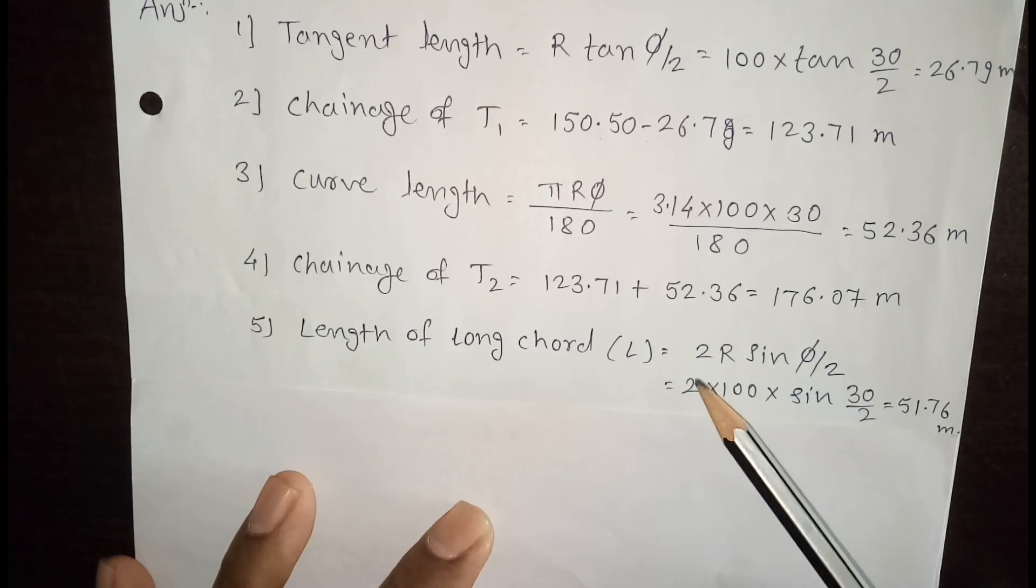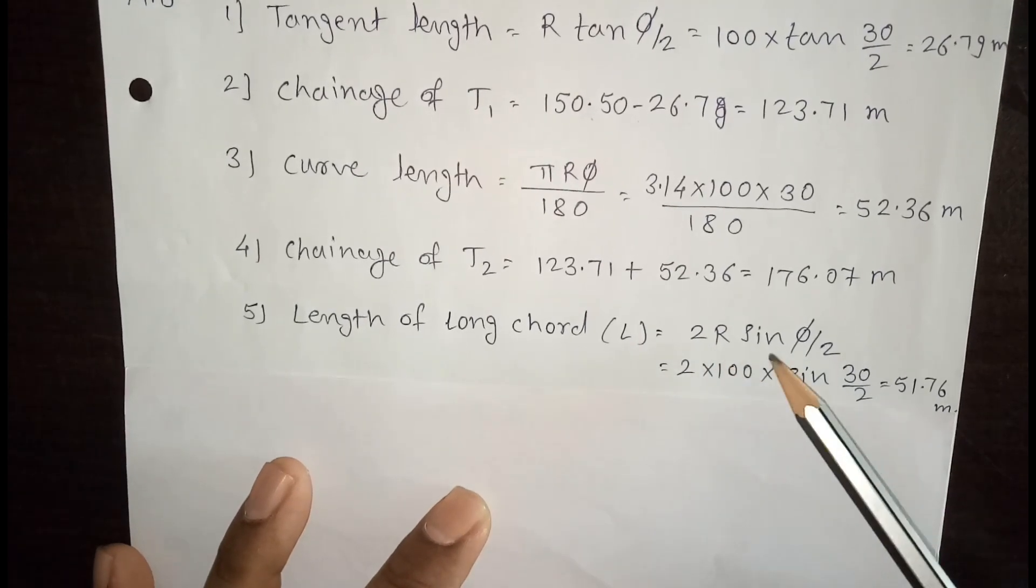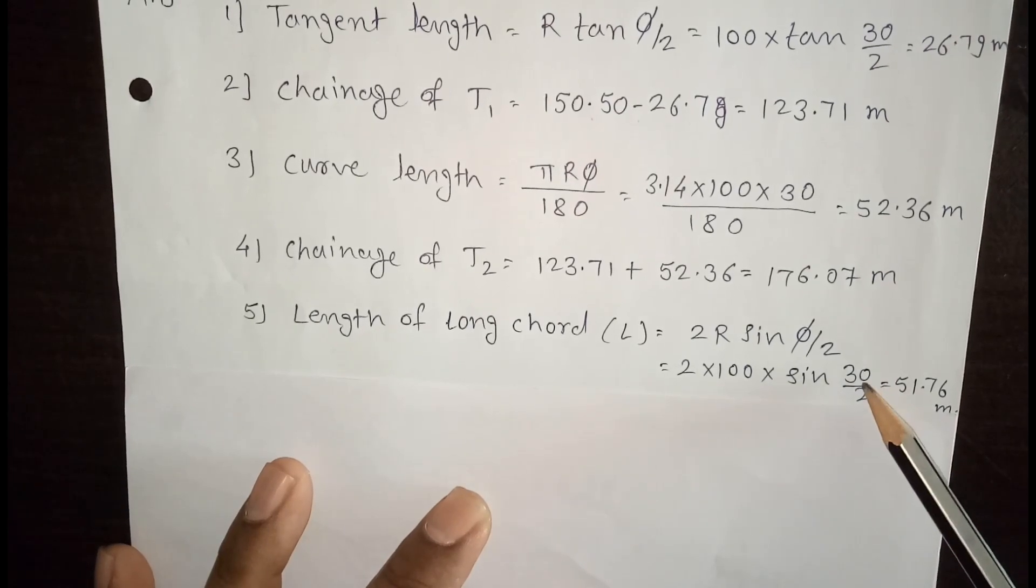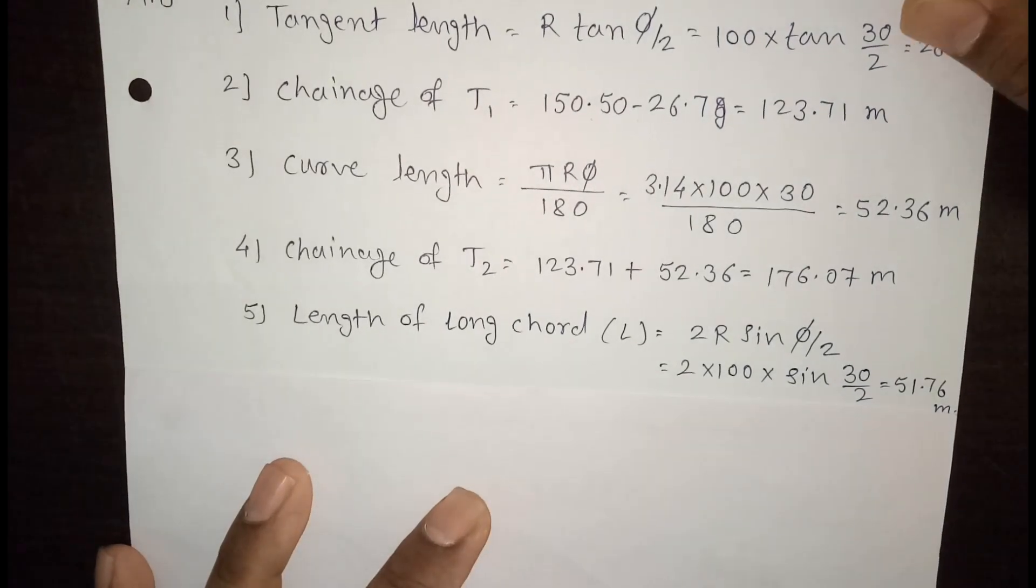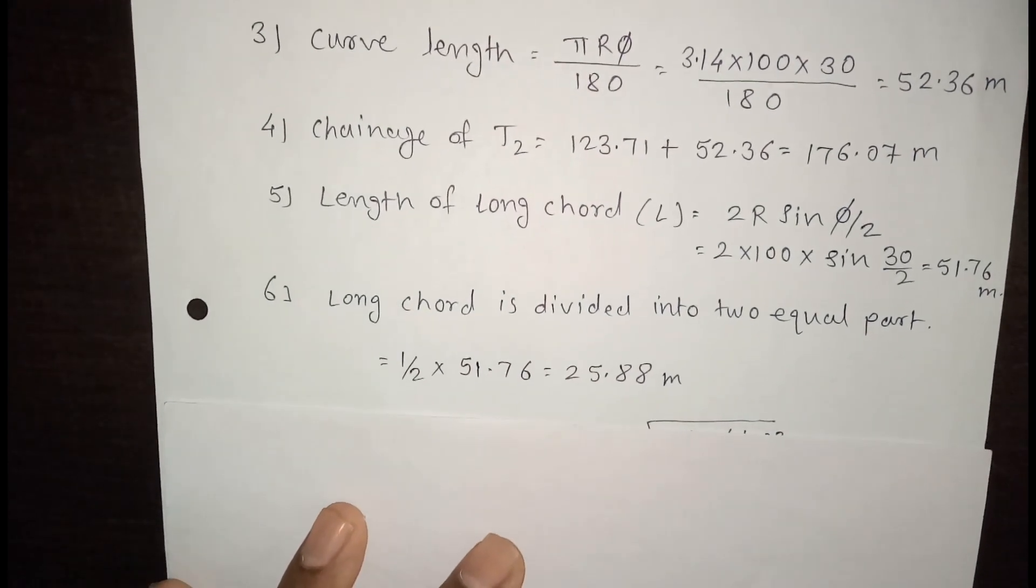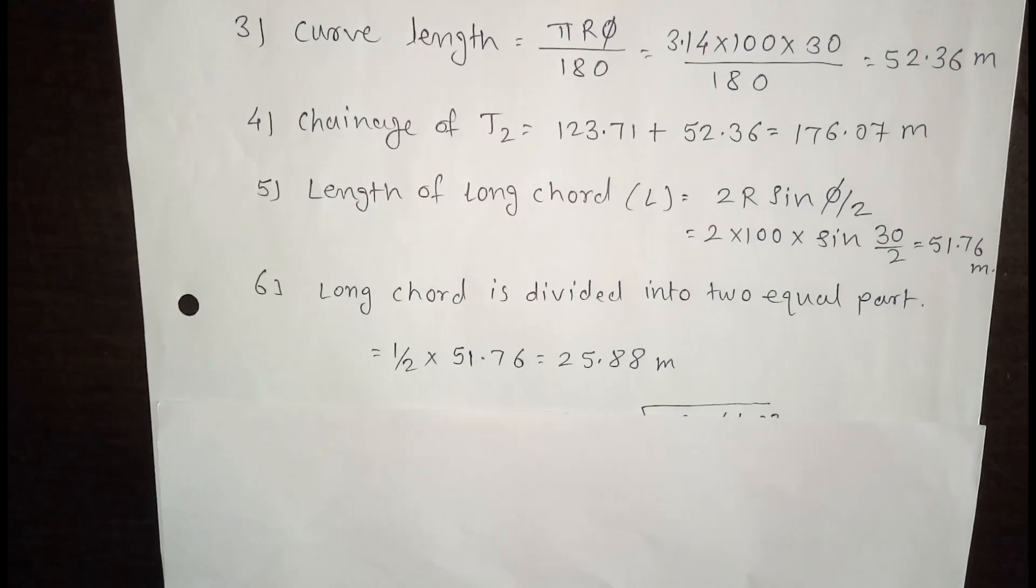Now we need to calculate length of long chord, that is L. Formula for length of long chord is 2R sin φ by 2. R is the radius, φ is the 30 degree. So length of long chord is 51.76 meter. Now this length of long chord is divided into two equal parts.